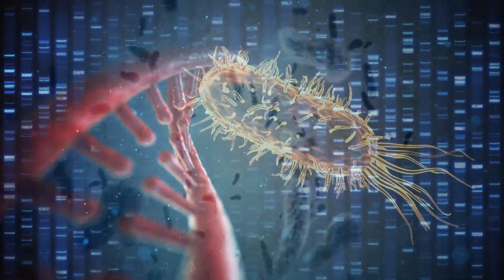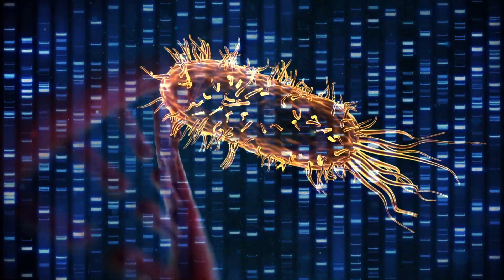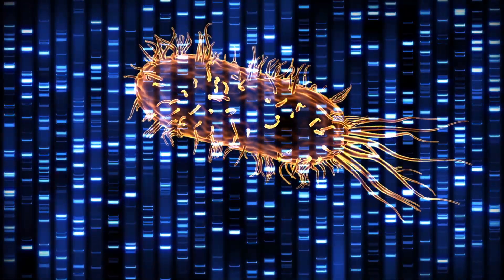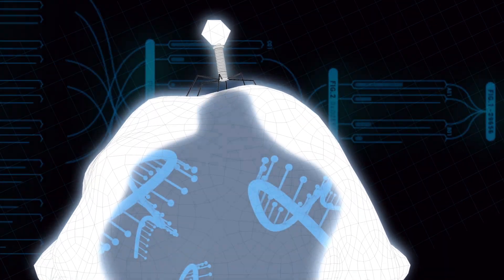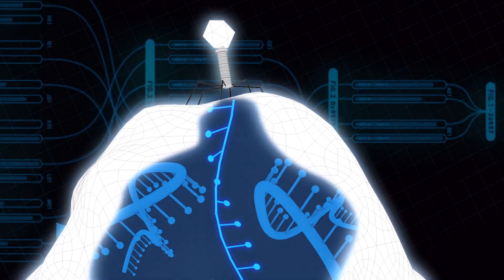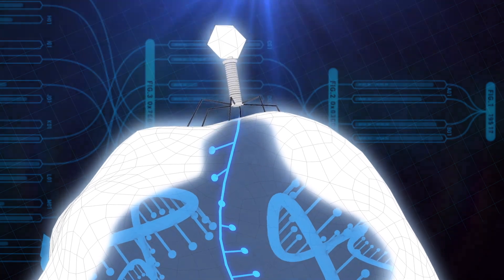Bacteria are single-celled organisms, and like other organisms, they can sometimes be vulnerable to viruses. When a virus attacks bacteria, it injects its own genetic information into the cell, and then it takes over the molecular machinery so that it can replicate itself inside the bacterial cell until the cell explodes.